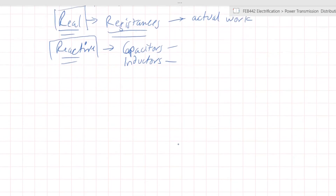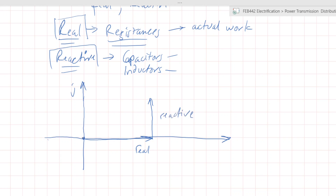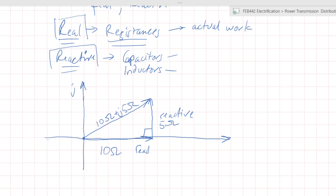The way we represent these two is that the real component is usually represented along one axis, and the reactive component along the other axis — these are the complex axes. The components are added to each other like complex numbers. So if your resistance is 10 ohms and your reactive impedance is 5 ohms, the resultant when they are added together will be 10 ohms plus J5 ohms. Your real components are on one axis and your reactive components on the other.